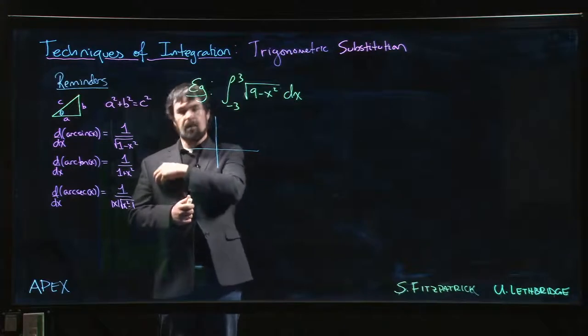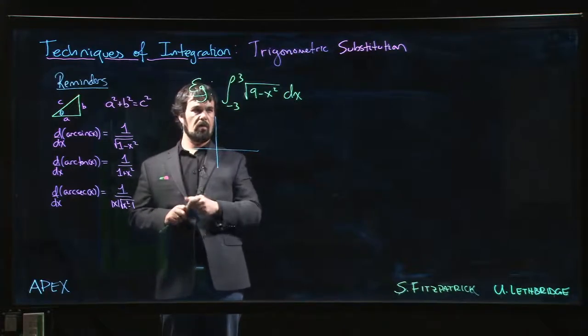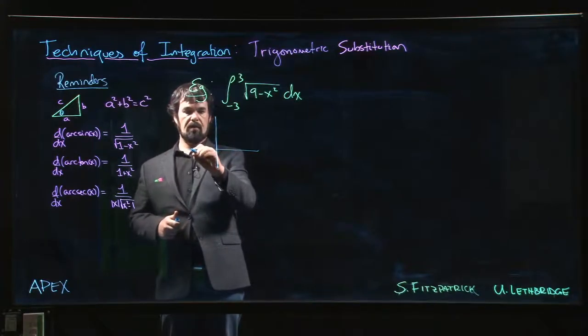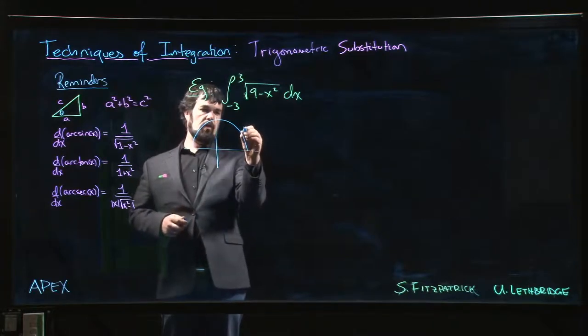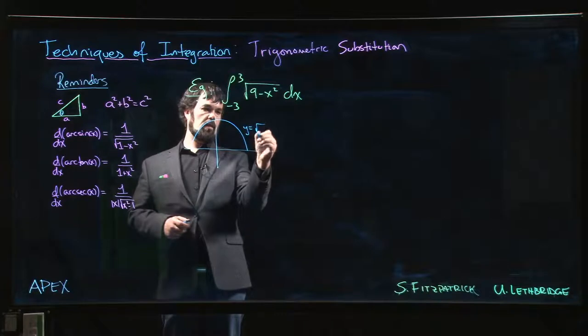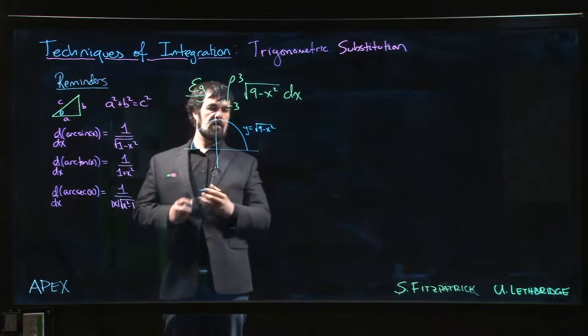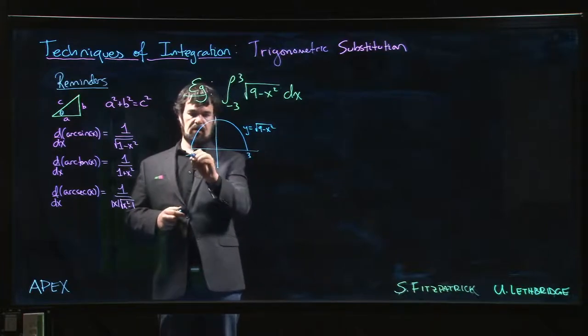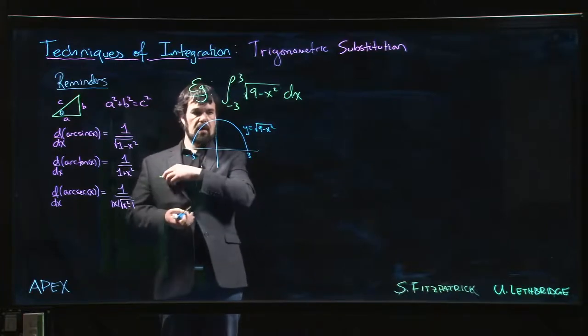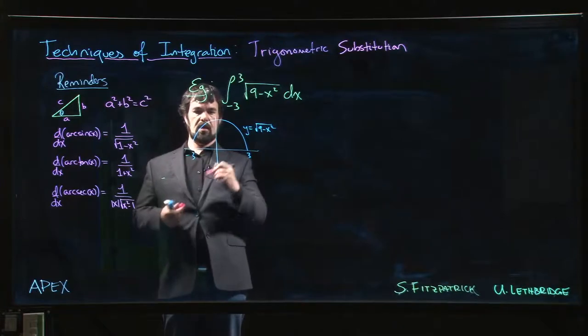y equals square root of 9 minus x squared is simply a half circle. So it's the top half of the circle x squared plus y squared equals 9. That's just a circle of radius 3 centered at the origin, going from minus 3 to 3. And so we know what the area should be.